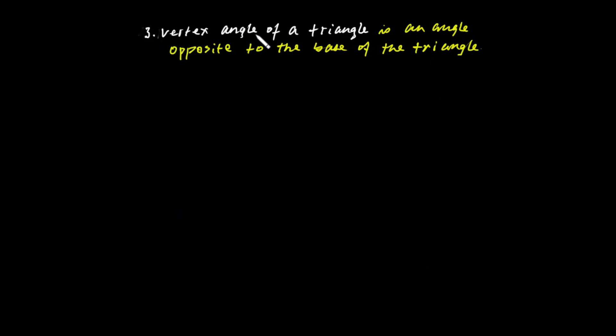The vertex angle of the triangle is simply an angle which is opposite to the base of the triangle.